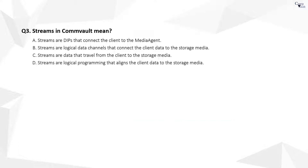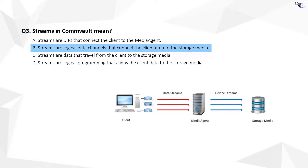Question 3. The correct answer is B. Streams are logical data channels that connect the client data to the storage media. Commvault provides the ability to define multiple streams to run backups and restores in parallel, to improve the rate at which data can be written to or retrieved from the storage media.